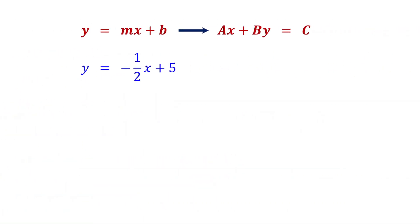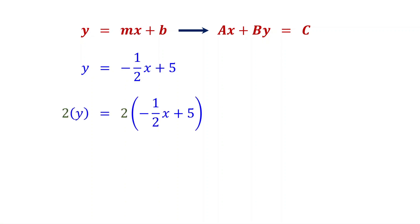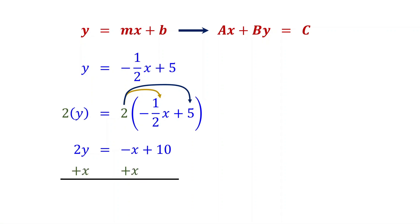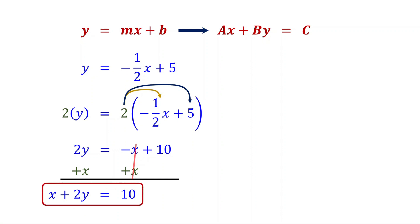To convert the slope-intercept form to standard form, first eliminate the fraction by multiplying both sides of the equation by the denominator. On the left, you get 2y. On the right, distribute the 2: 2 times negative 1 half x is negative x, as the 2's cancel, and 2 times 5 is 10. Then move the x term to the left by adding x to both sides. On the left, you get x plus 2y. On the right, these cancel, leaving 10. This is the equation of the parallel line in standard form.